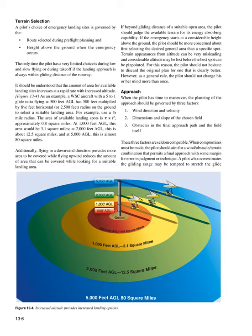If beyond gliding distance of a suitable open area, the pilot should judge the available terrain for its energy-absorbing capability. If the emergency starts at a considerable height above the ground, the pilot should be more concerned with first selecting the desired general area than a specific spot. Terrain appearances from altitude can be very misleading and considerable altitude may be lost before the best spot can be pinpointed. For this reason, the pilot should not hesitate to discard the original plan for one that is clearly better. However, as a general rule, the pilot should not change his or her mind more than once.